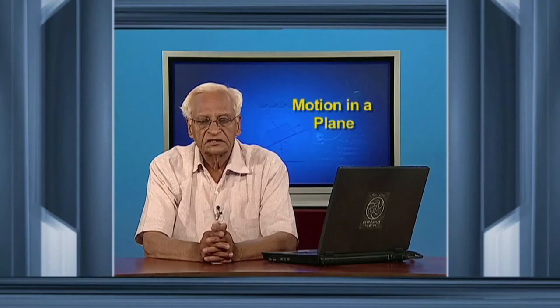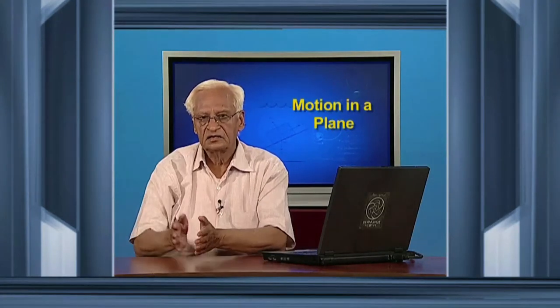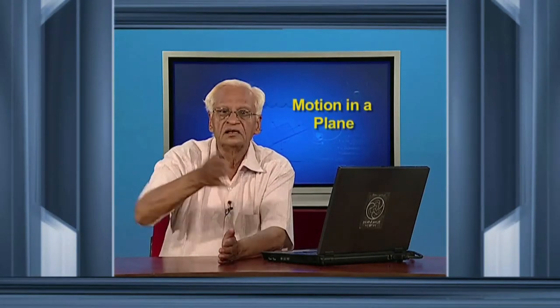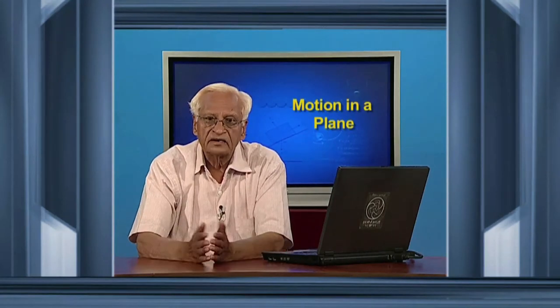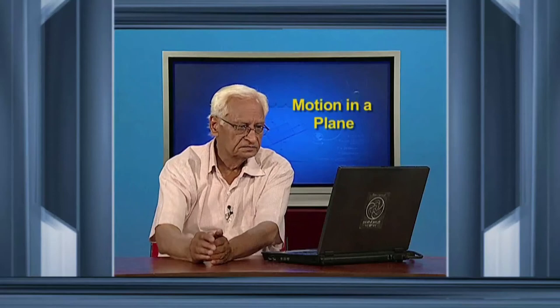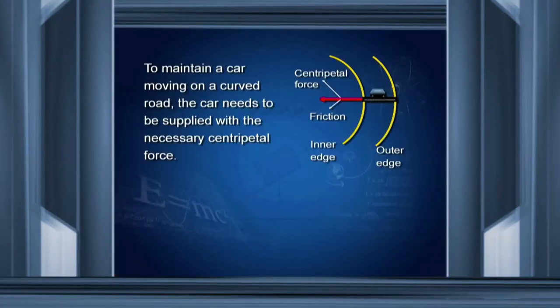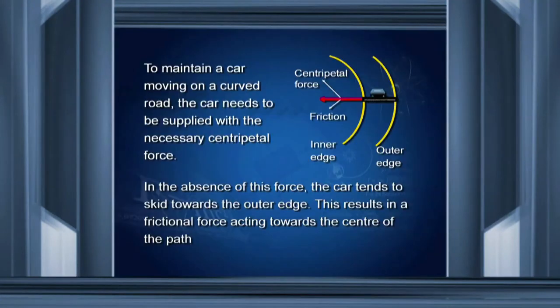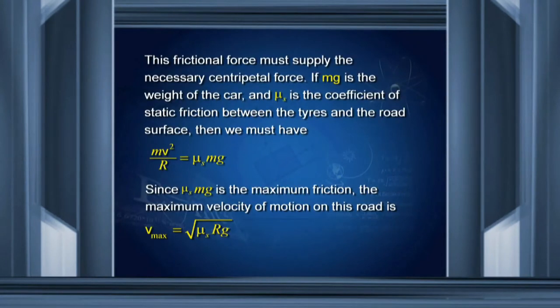If you are on a curved road driving a bike, you have to bend slightly towards the inner edge of the road. You have to do this to supply the necessary centripetal force so that you can keep moving in a circular path. To maintain a car moving on a curved road, the car needs to be supplied with the necessary centripetal force. In its absence, the car tends to skid towards the outer edge. This results in a frictional force acting towards the center of the path.